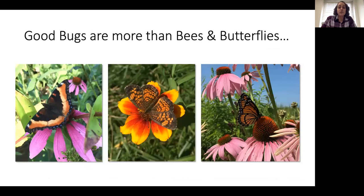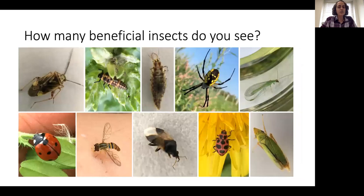It's also important to recognize that good bugs are a lot more than just bees and butterflies. A lot of people are very concerned about pollinators and protecting pollinators, but when we're talking about good bugs in the garden, there's a lot more out there. Specifically, there are natural enemies of pests. I've got another slide with ten pictures — I'd like you to take a look and decide how many of these are beneficial insects, specifically natural enemies of pests. Think about your answer, type it into the chat, and in a moment I will count down.